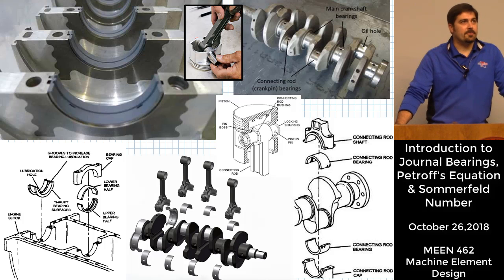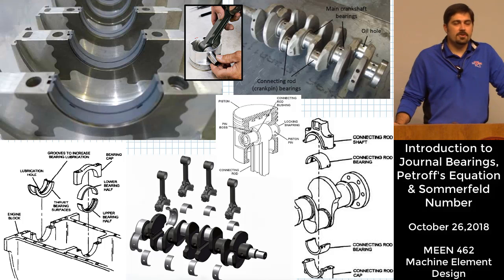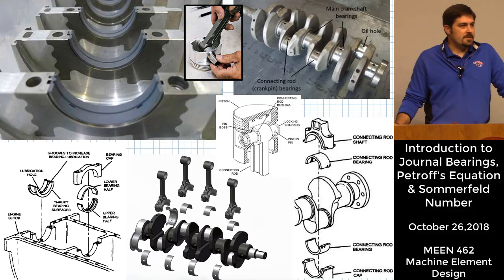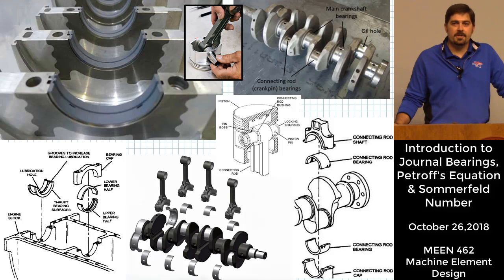Today's lecture is going to be a little different. It's one where you might have a harder time taking notes, but I want to talk through a very common type of machine element included in many machines — what is called a journal bearing. Journal bearings rely on there being some type of lubrication between two round parts that are interfacing with one another.